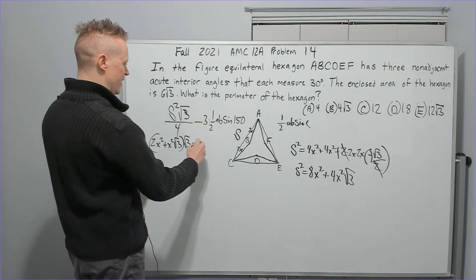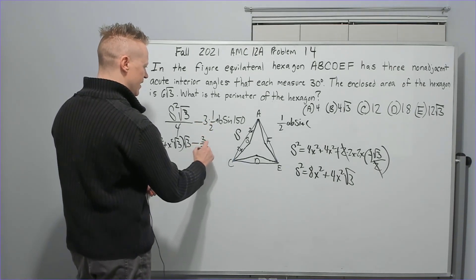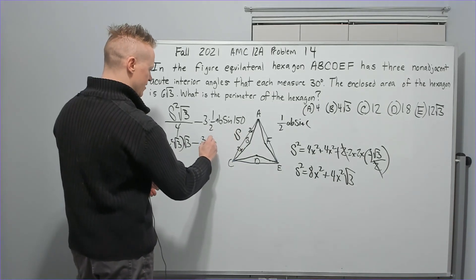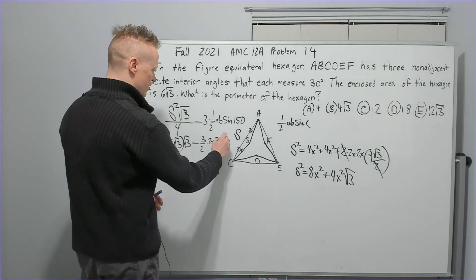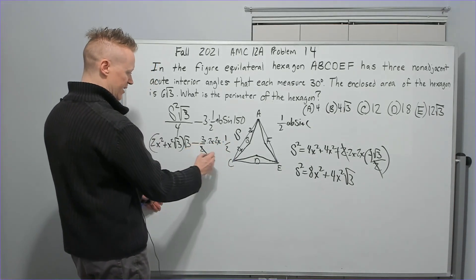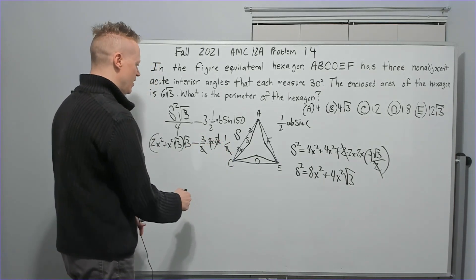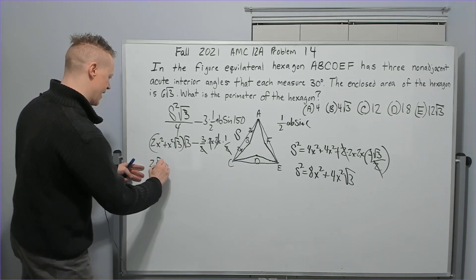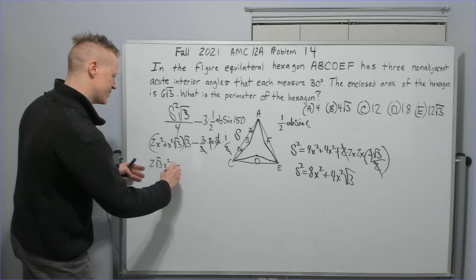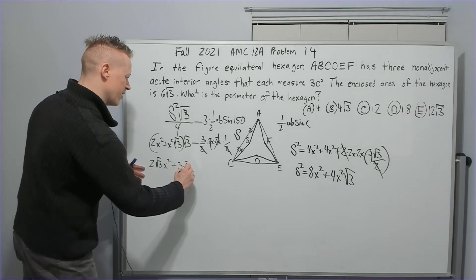We've got times root 3 minus. Now, how are we going to do this? It's going to be 3 halves. A and B are 2X and 2X. What's the sine of 150? The same as the sine of 30, one half. So you've got one half here. You're going to cancel these twos with these twos. What does that give us? Root 3 distributed: 2 root 3X squared plus 3X squared minus.